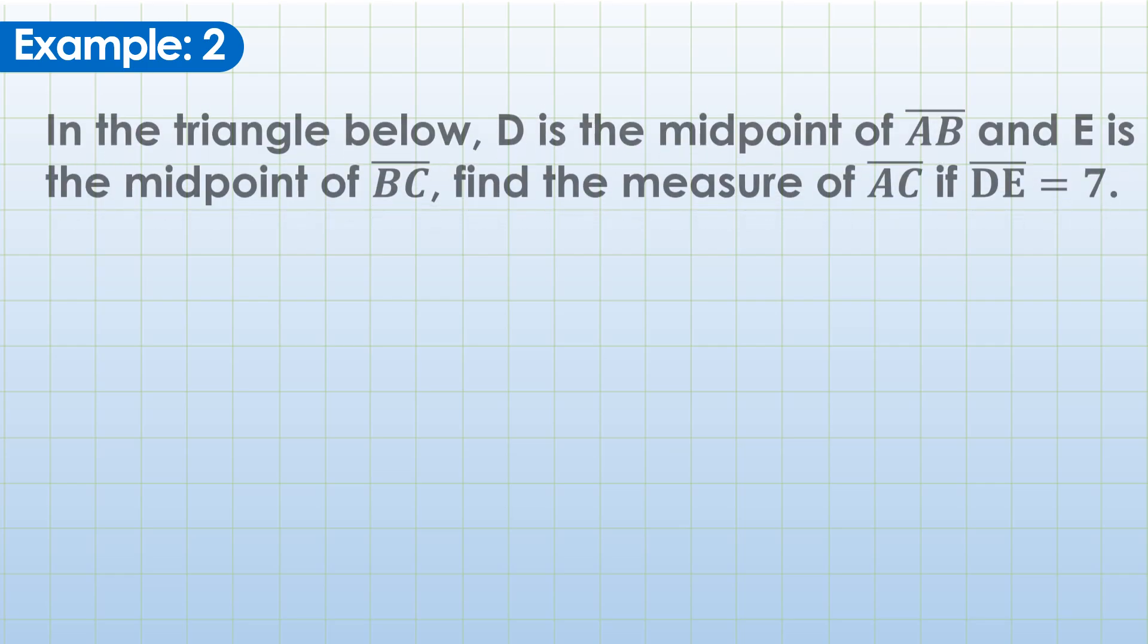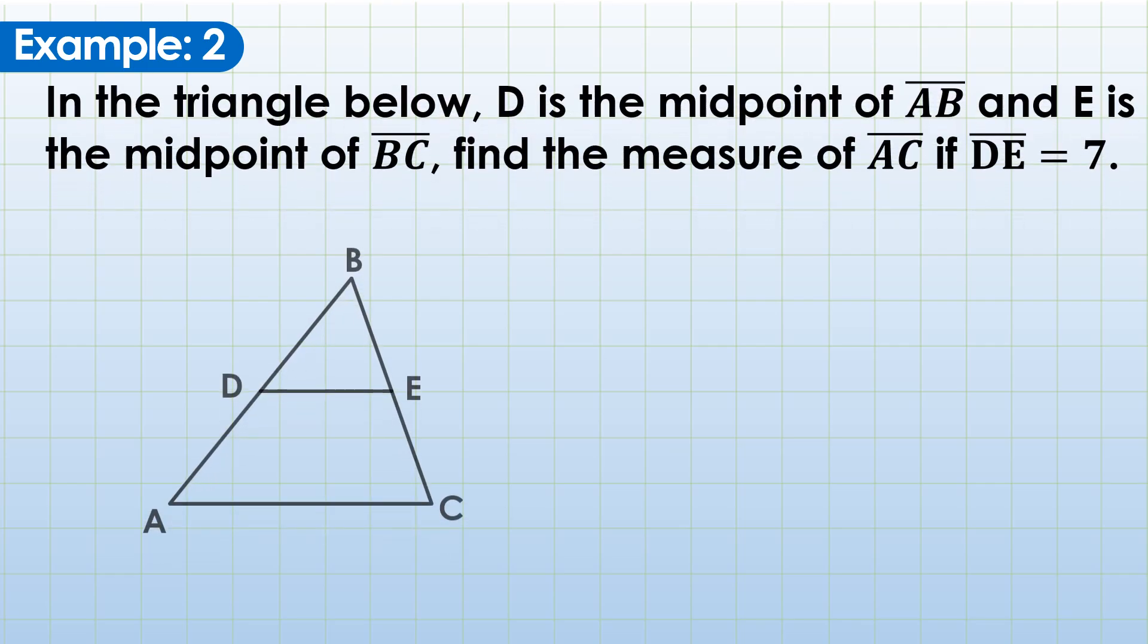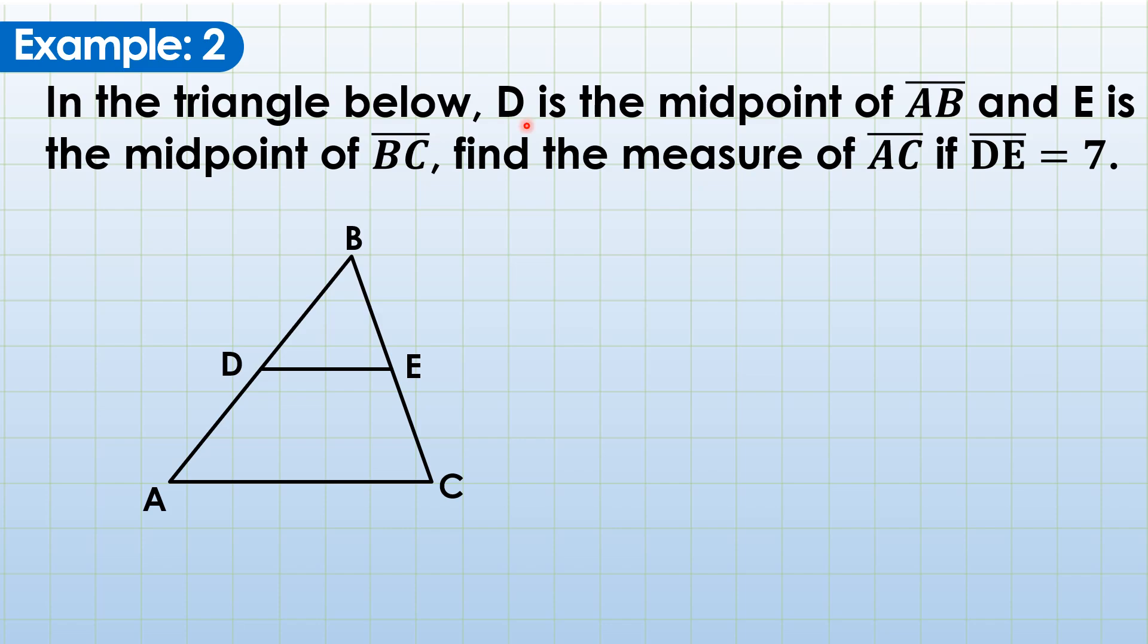Just like example number 2. In the triangle below, same illustration as example 1, D is the midpoint of AB and E is the midpoint of BC. Find the measure of AC if DE is 7. The midline is given and you are looking for the length of AC. You're just going to double DE, and that's it, 14 is our answer here.